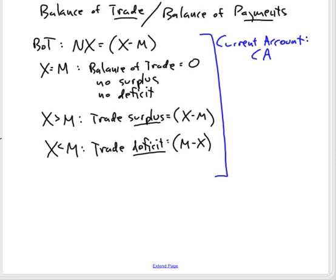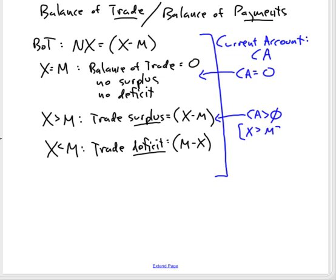The current account is a technical term for what we more loosely call the trade surplus or trade deficit. If exports are equal to imports, then the current account is equal to zero. If there's a trade surplus, then the current account is positive because exports are greater than imports.